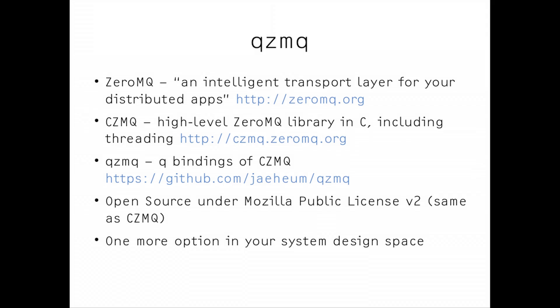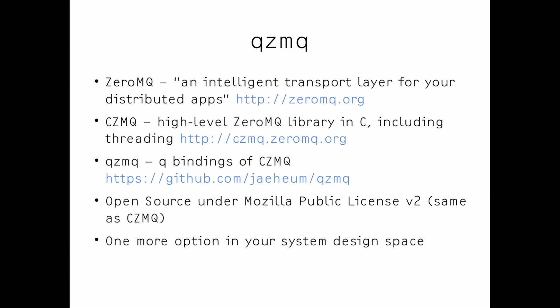What I've shown is essentially marrying ZeroMQ — which is just a transport layer with lots of options for laying out your data network — with Q's functional capabilities. CZMQ is done by the same people as ZeroMQ and gives a higher-level binding plus a multi-threaded programming API. QZMQ is the Q binding so you can use the CZMQ library from Q. I've put it up on GitHub as open source. It gives you the freedom to design your architecture moving not just data but also code around.